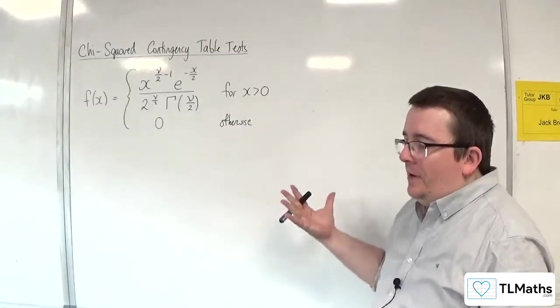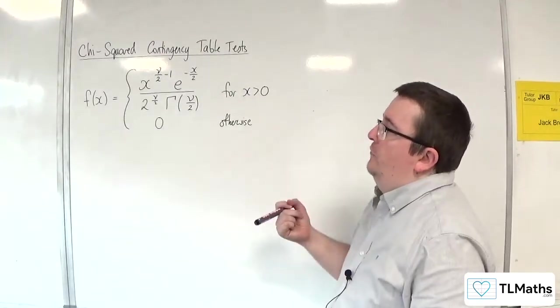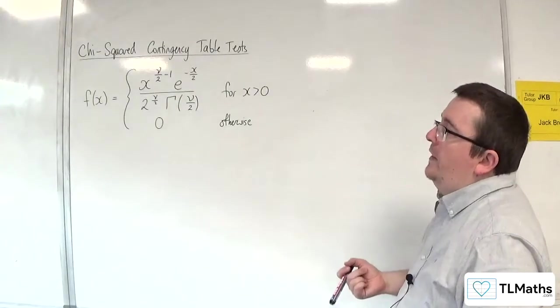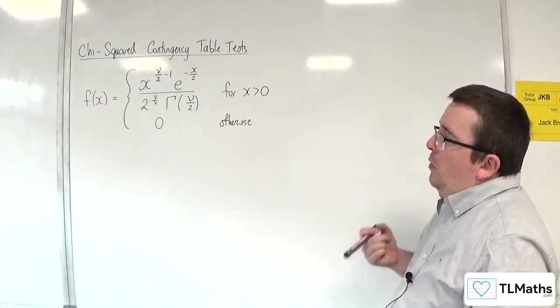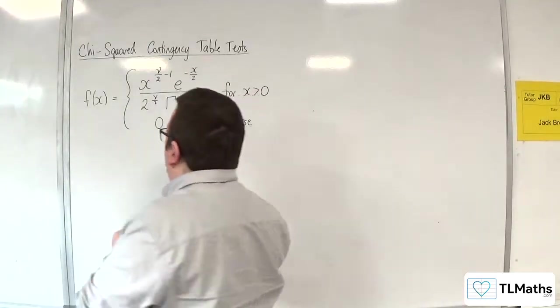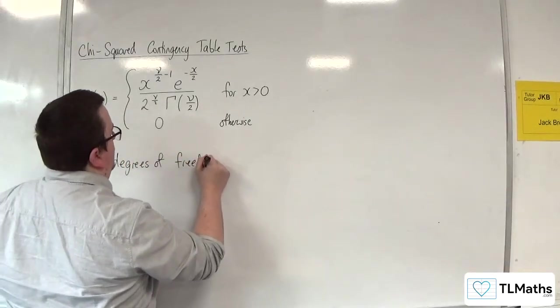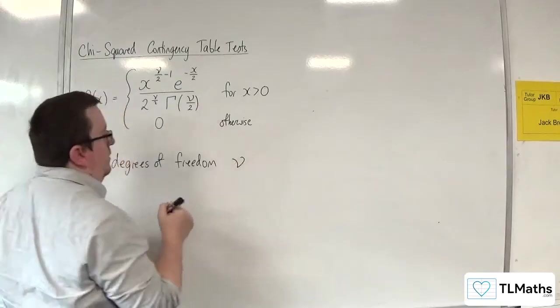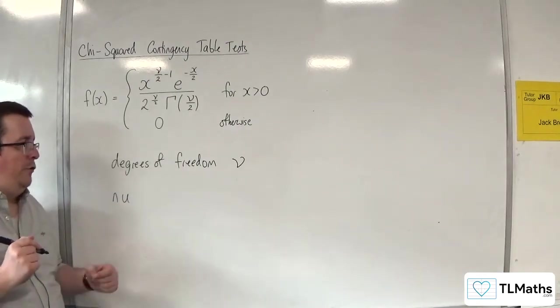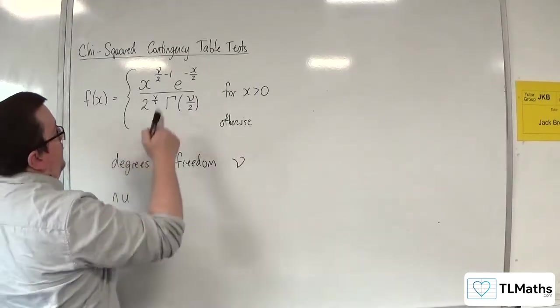Now, I've put this up here for interest's sake. This is the equation for the chi-squared distribution. There's a few things in there that you won't know. The V shape that we've got here, that's the bit that I'm interested in in this video. We refer to that as the degrees of freedom. It's not a V, it's nu. N-U is how that Greek letter is spelt. And that is the degrees of freedom that you see here.